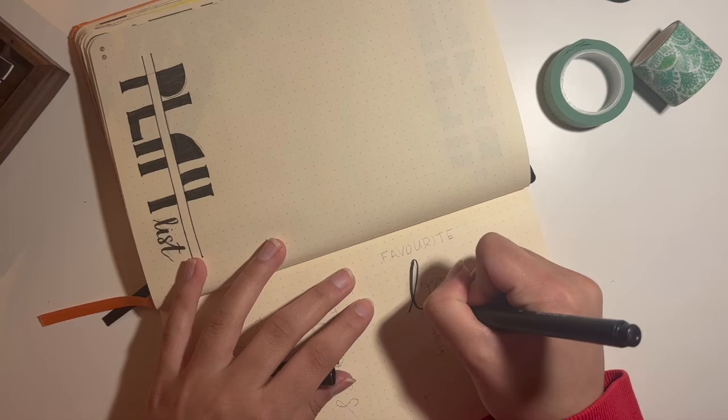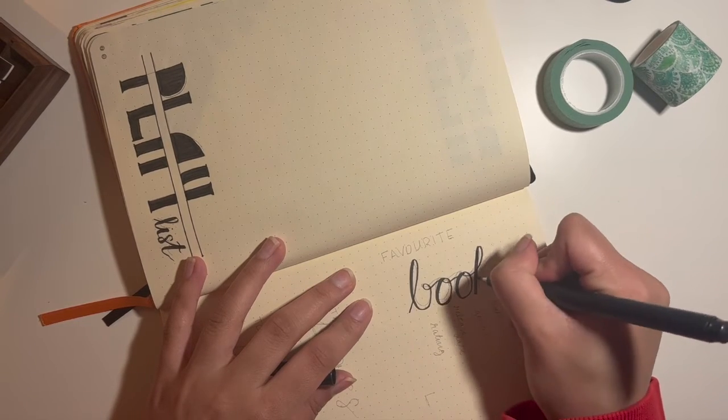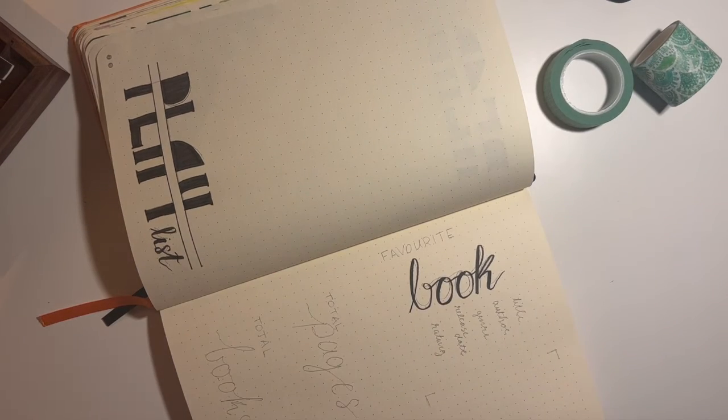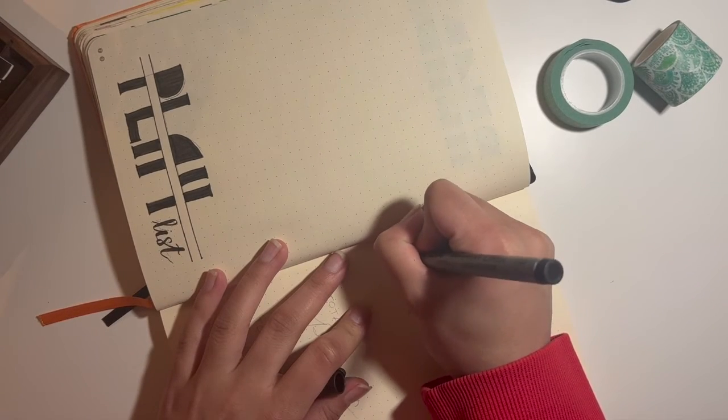And then beside it I have basically my favorites of the month. So I have my favorite book, and then I have some stats. So I'll have total pages read and then total books.